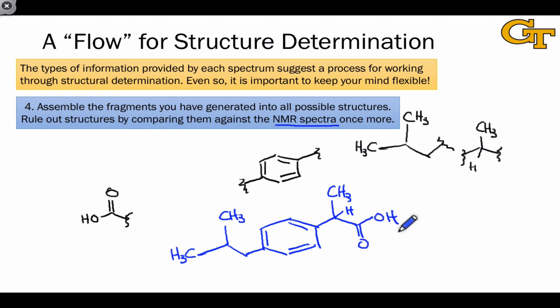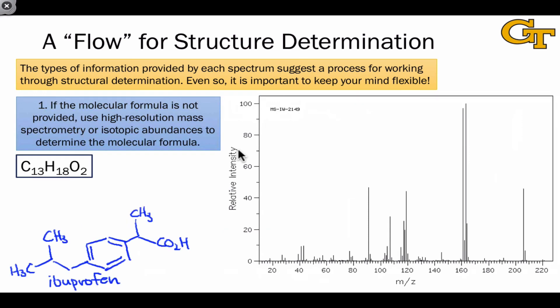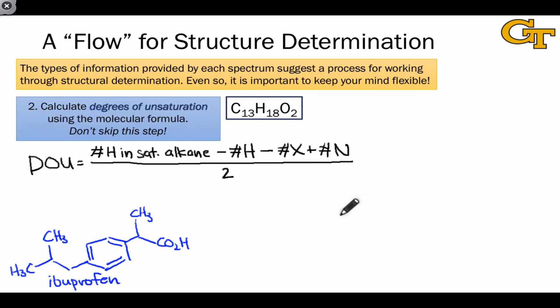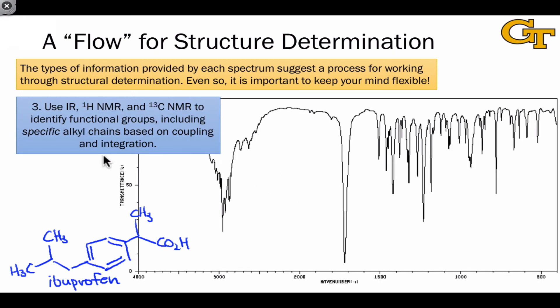In fact, this is the structure of the molecule that we've looked at here, and it's ibuprofen. The structure itself is not so important. The main thing to keep in mind is the process, and so let's review that once more. First, if the molecular formula isn't provided, use mass spectrometry or isotopic abundances to determine the molecular formula. Calculate degrees of unsaturation using this formula, and start to generate some candidate structures based on degrees of unsaturation, especially if it's very high, suggesting the presence of an aromatic ring.